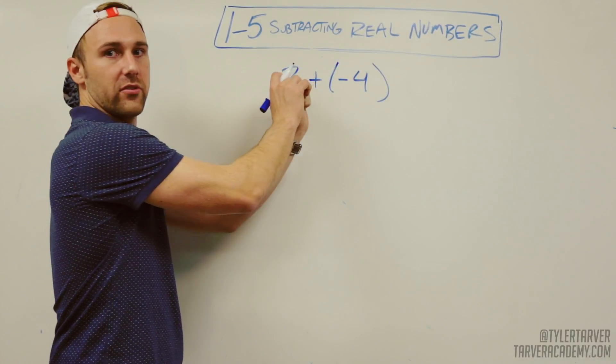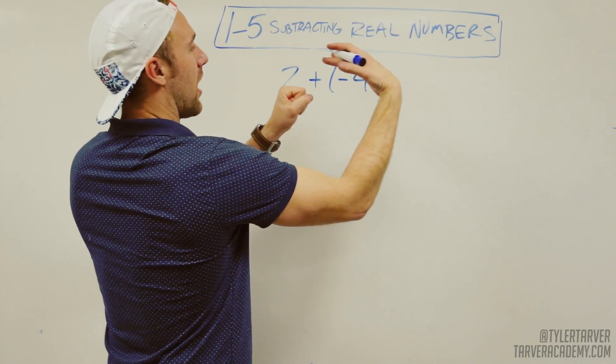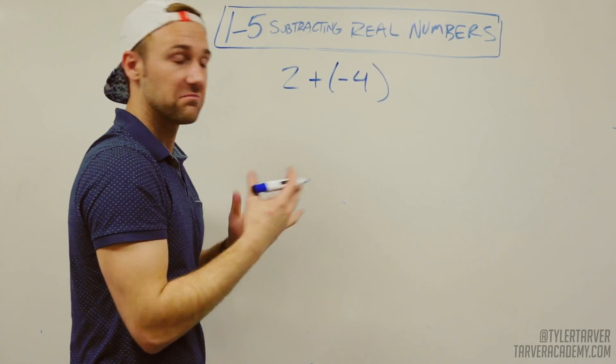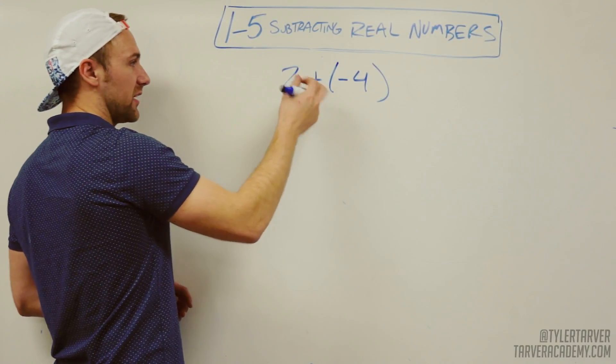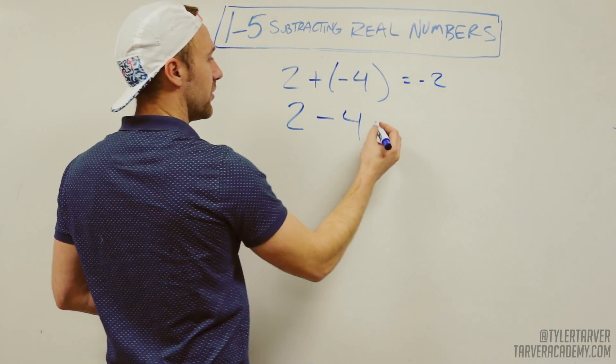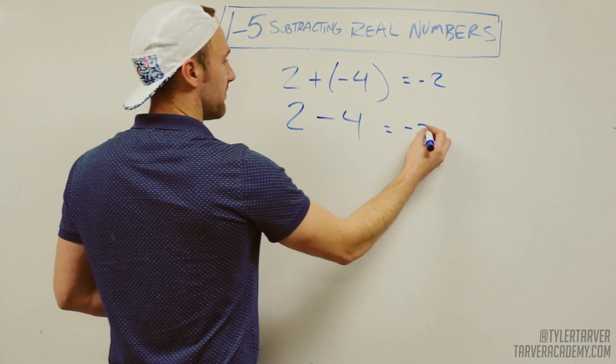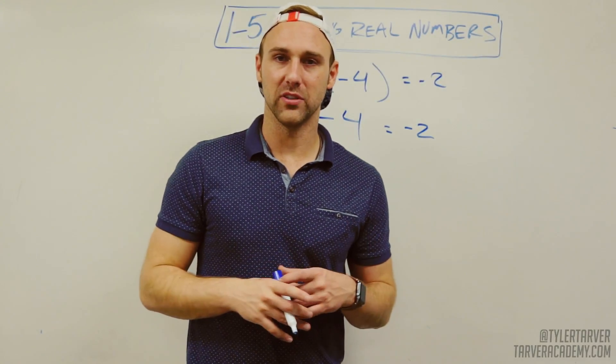This is the rock, and that's paper. You can remember that because it looks like paper. Rock takes it. So whenever you rewrite it, you can drop it because it takes it over. 2 minus 4. 2 plus negative 4 is negative 2. It's the same thing. That's the property of subtracting real numbers.